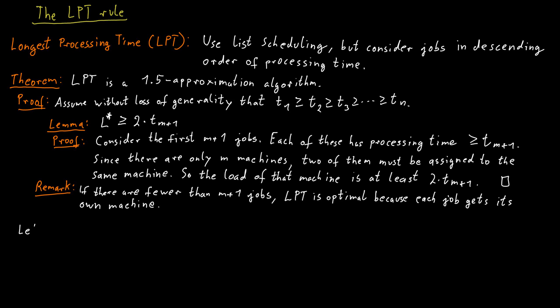Consider the machine with the largest load in the end. Let that be machine i. And the load of that machine is L_i. If the machine only contains a single job in the end, then we have an optimal solution, because clearly the optimum makespan needs to be at least as large as the processing time of that single job.